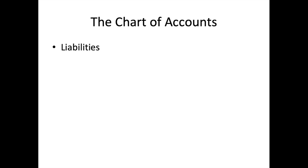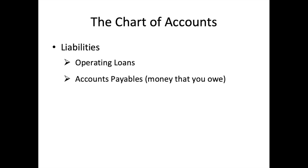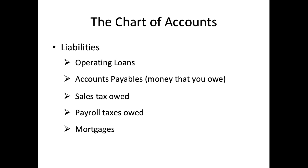Liability accounts can be accounts like operating loans such as a FarmLink loan, accounts payables which track money that you owe to your vendors, sales tax that you have collected from customers but still owe to the state board of equalization, payroll taxes that you owe on your weekly payroll but only remit quarterly, and accounts tracking mortgages that you have with a bank.